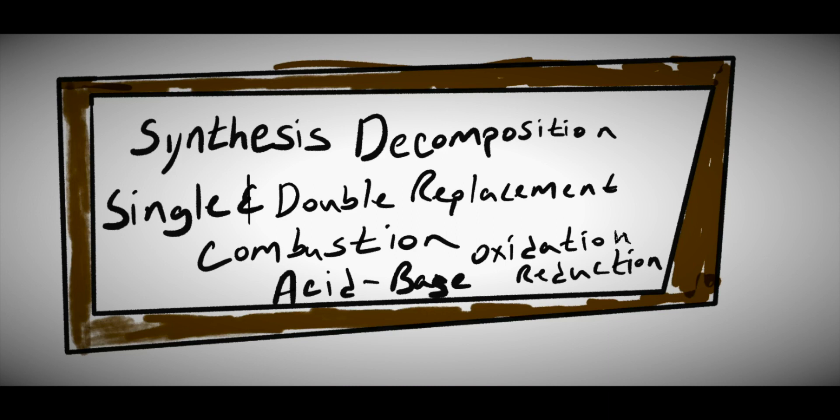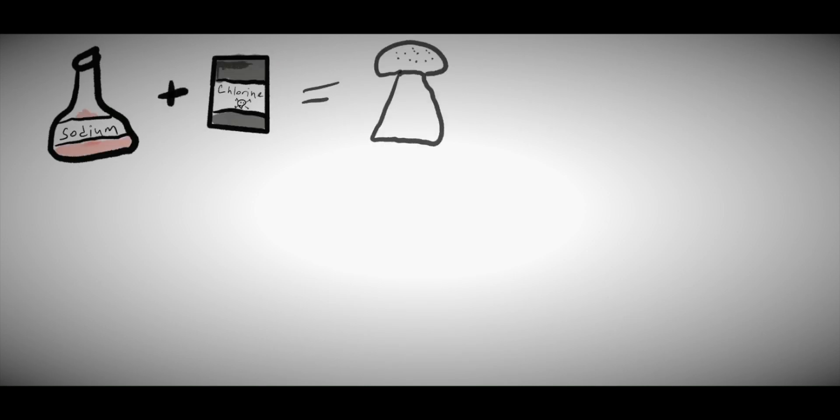In this video, we are going to cover the first type of chemical reaction, synthesis. A synthesis reaction is when two or more substances come together to form a new compound. These types of reactions can also be known as composition reactions because they seem to compose or make new substances.